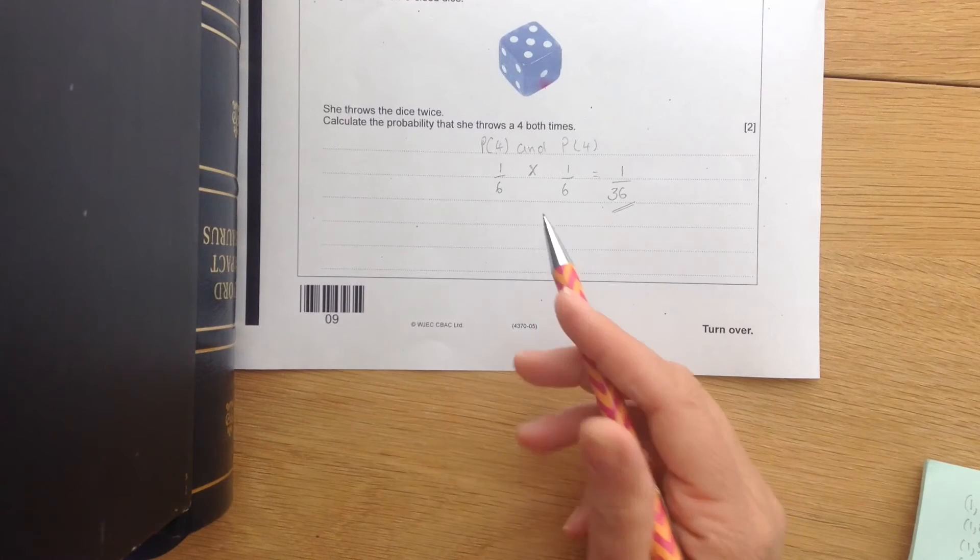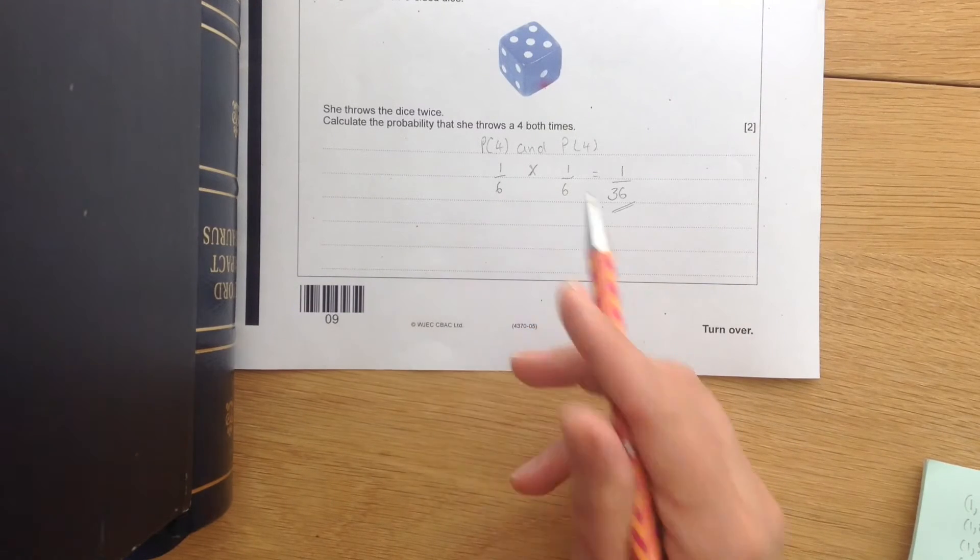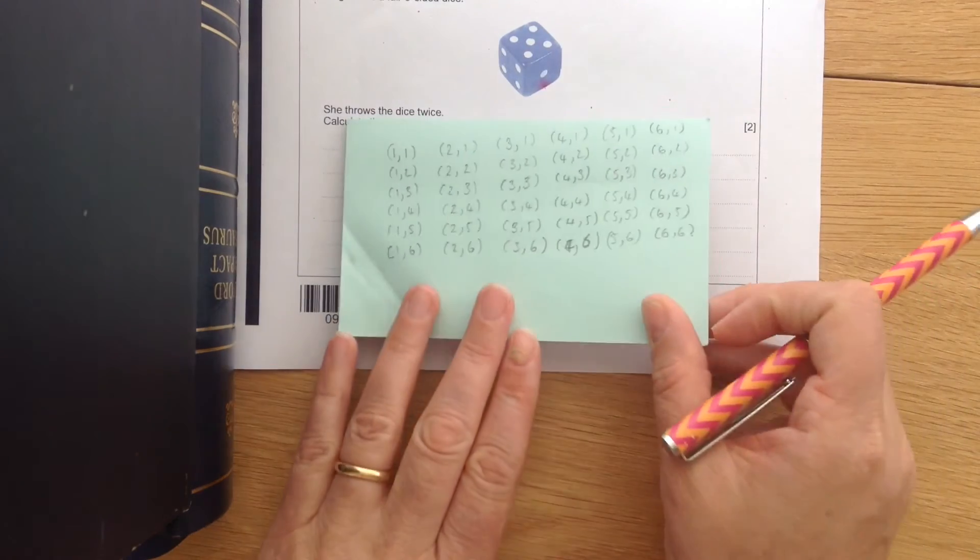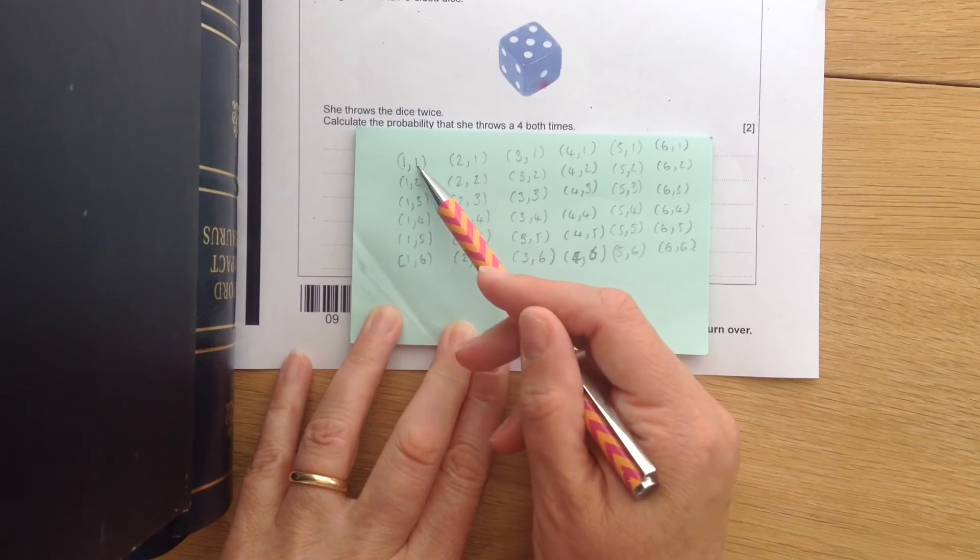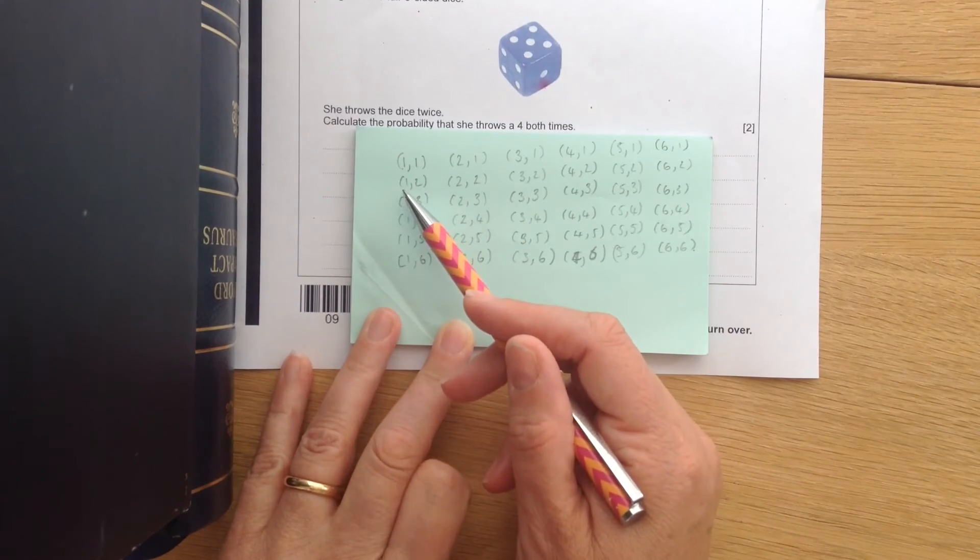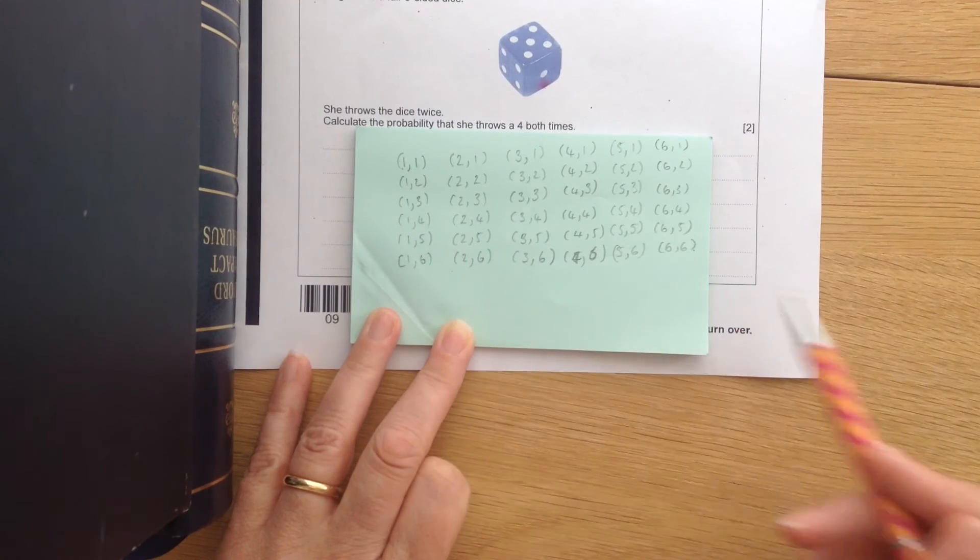Now, if you haven't been taught it this way, you could do it a longer way. So you could do it by listing out all the different outcomes. So here they are. You get a one on the first dice and a one on the second dice. Then you get a one the first time and a two the second time, a one the first time and a three the second time, etc.